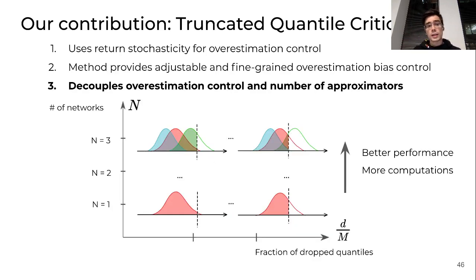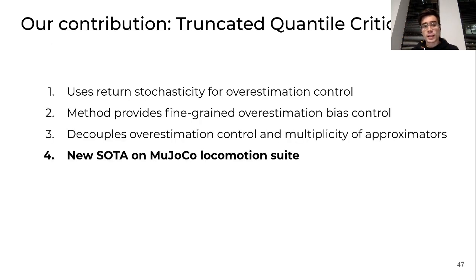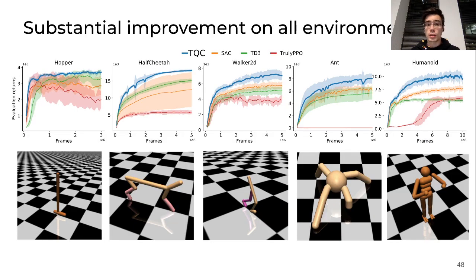The third contribution is that our method decouples overestimation control and ensembling. The Y axis is the number of networks in the ensemble, corresponding to the process of ensembling. And here you can see that we can independently vary the number of networks and the degree of overestimation control. We can vary them independently. And last, but not least, our method establishes a new state-of-the-art on the MuJoCo locomotion suite.